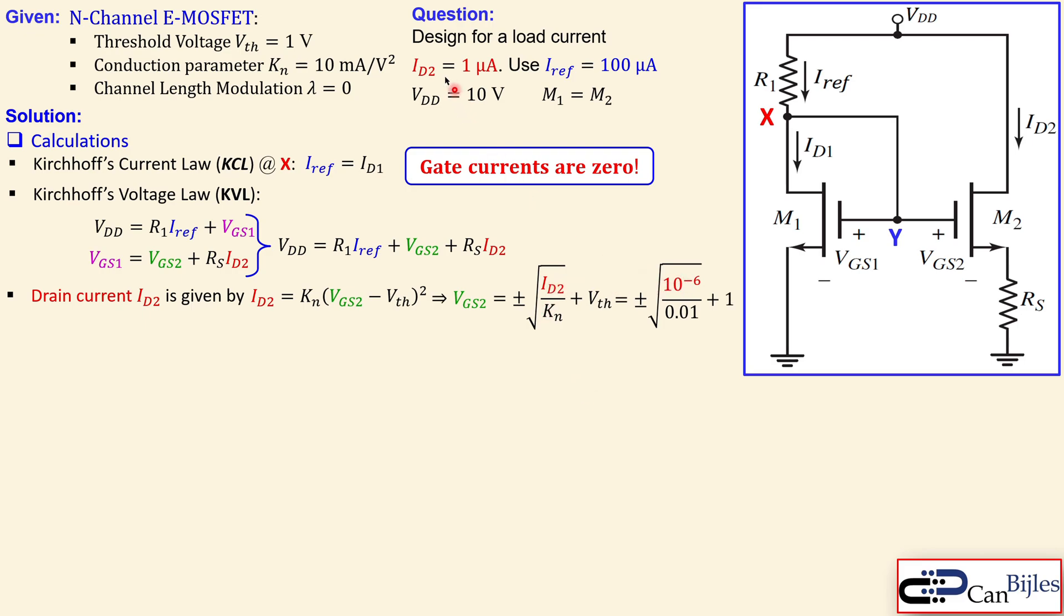We have 10 to power minus 6, which is 1 microamp. We have a Kn of 0.01, that's shown here, and we have also the threshold voltage of one volt. Now when you do the calculations, you will get here zero plus or minus 0.01 plus one.